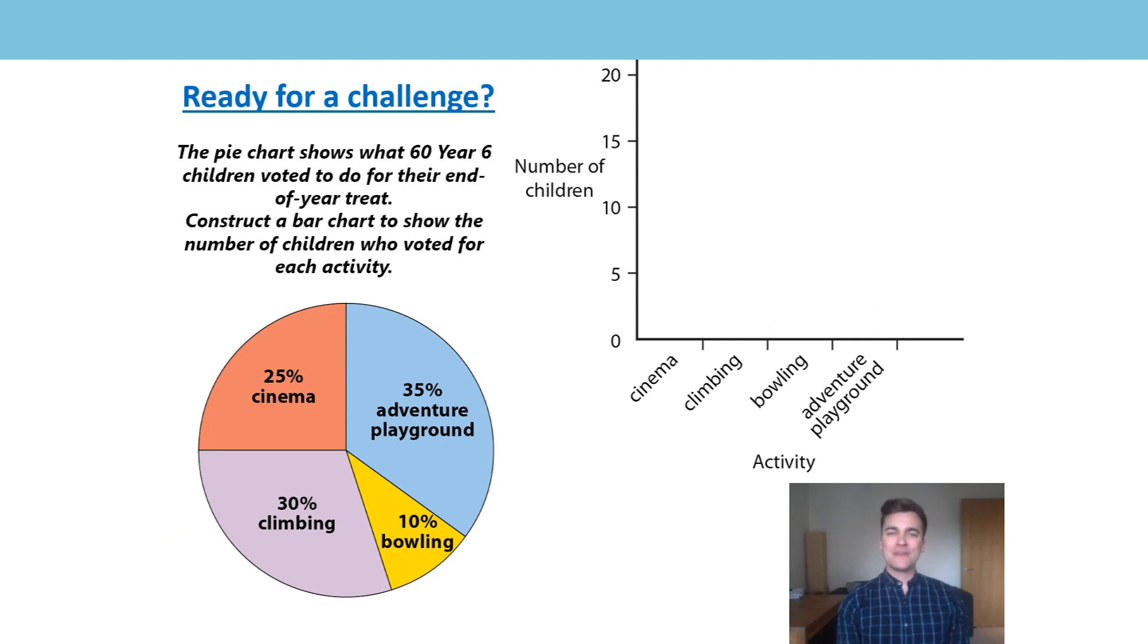Give me a thumbs up if you gave the challenge a go. Good. So, let's take a look, shall we? This is an exciting challenge. We're taking information from a pie chart and transferring it into a bar chart. Pie chart shows what 60 Year 6 children voted to do. So the whole is 60 and that 60 has been split into how many parts? Four.